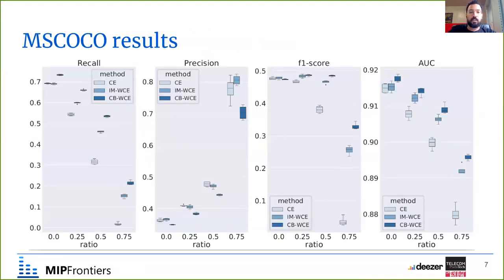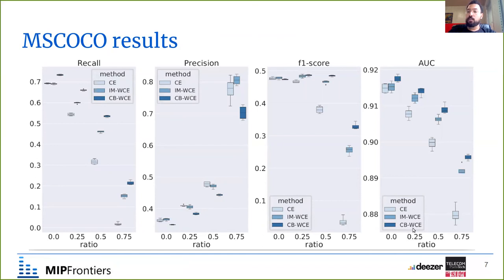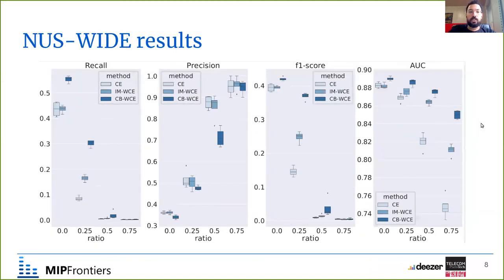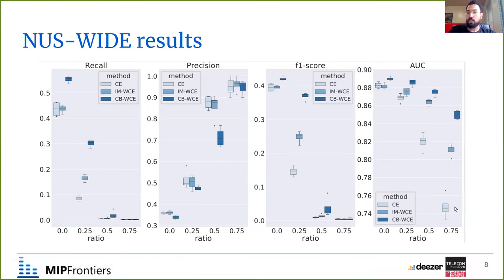We computed results on the MSCOCO dataset and found that, across different evaluation metrics, as the ratio of missing labels increases, the weighted cross-entropy loss we propose significantly improves model performance. We saw similar results on the NUS-WIDE dataset, where performance improves with the weighted loss compared to the original cross-entropy, validating that this easy-to-use weighted loss is a proper solution for accounting for missing labels when using a pre-trained model.